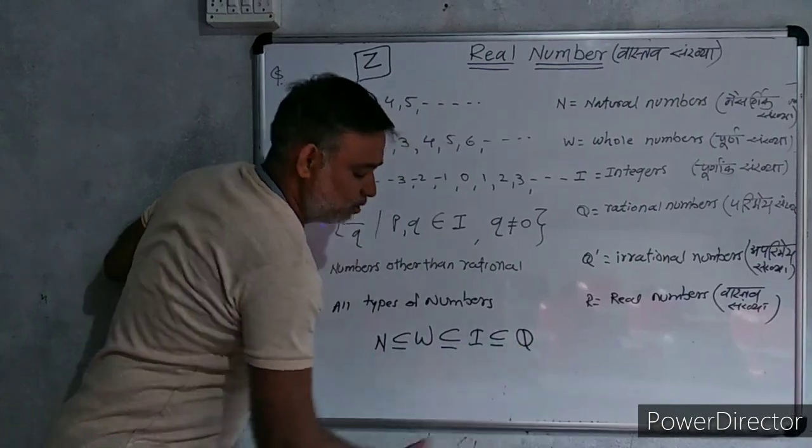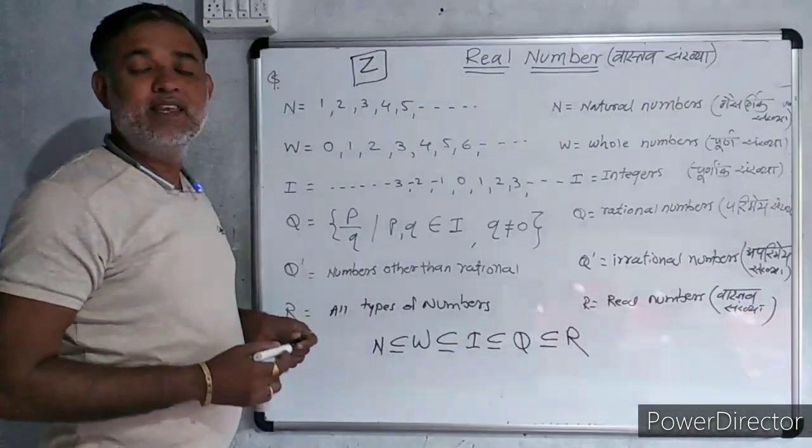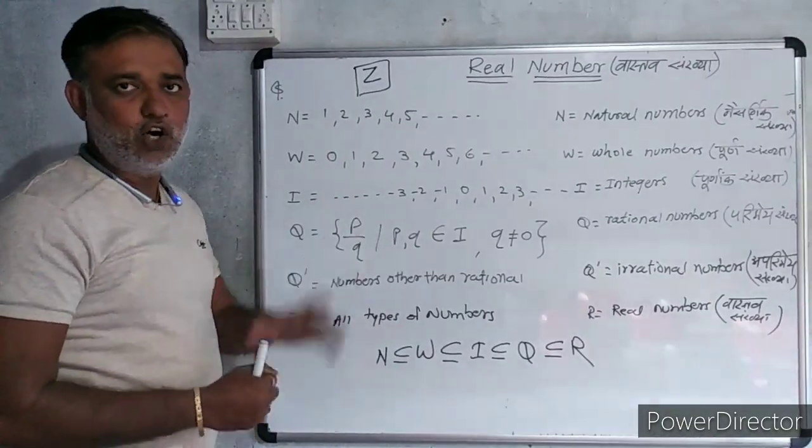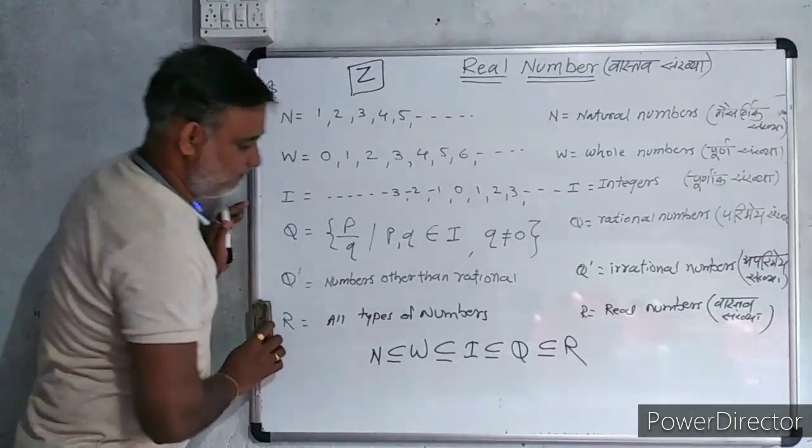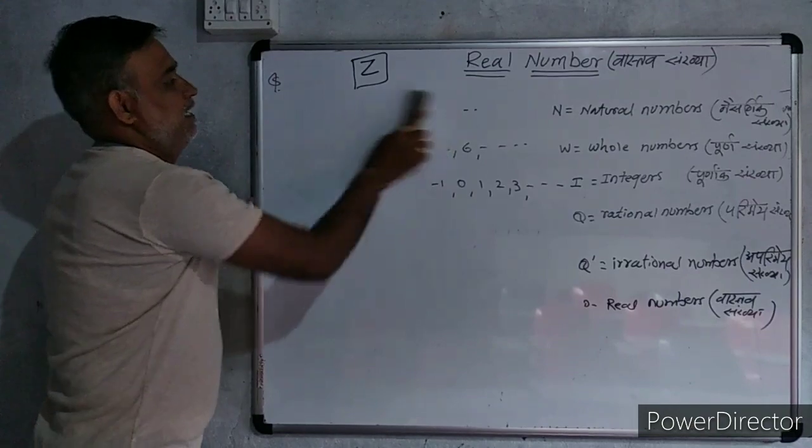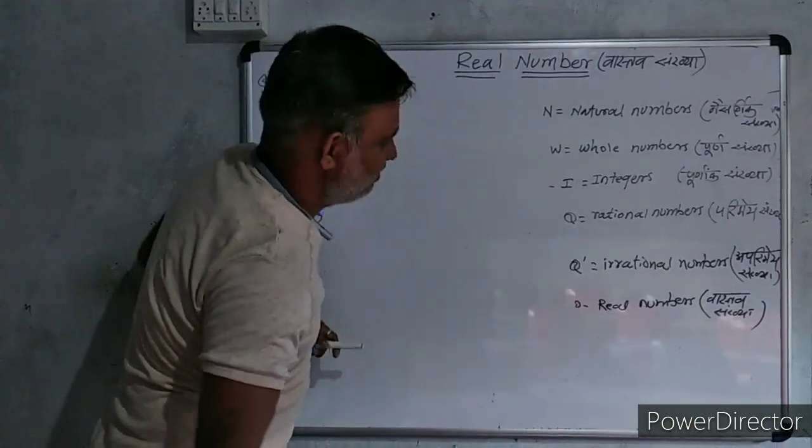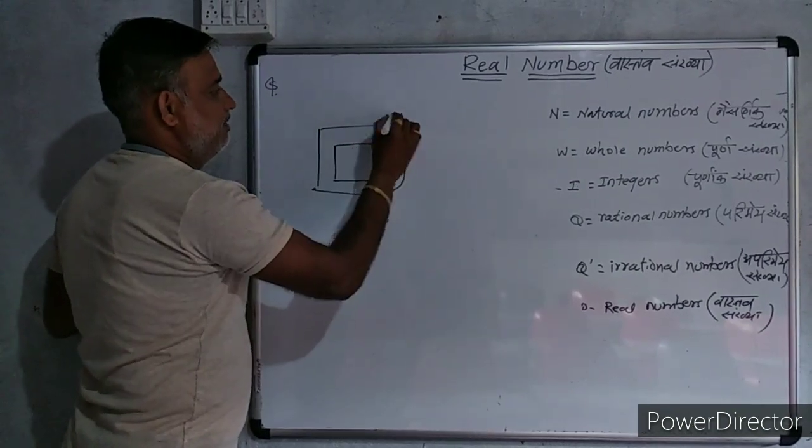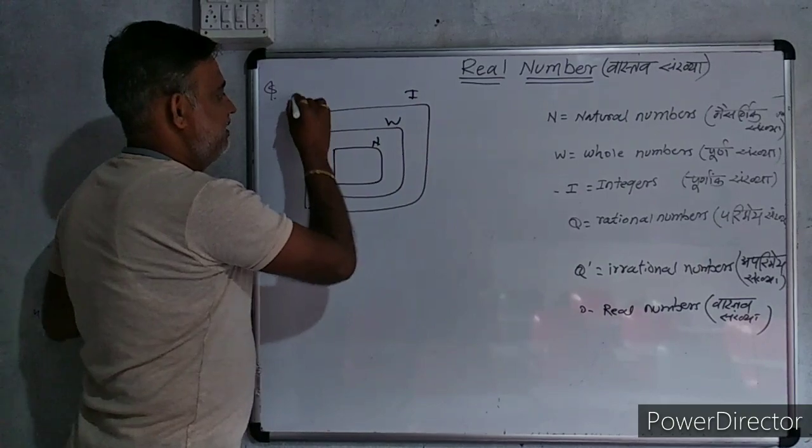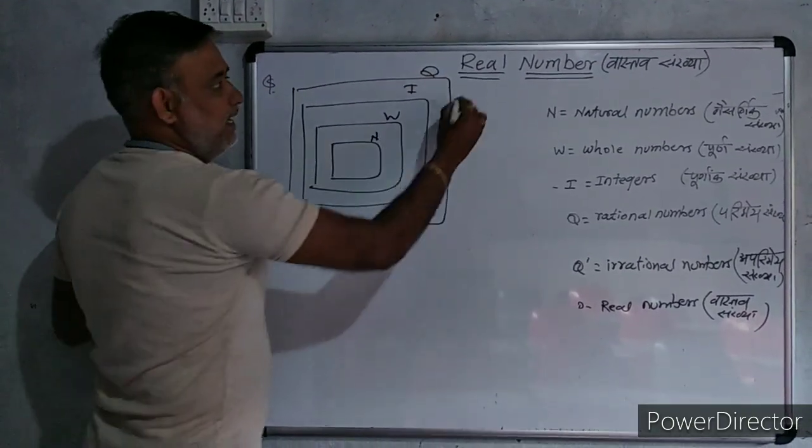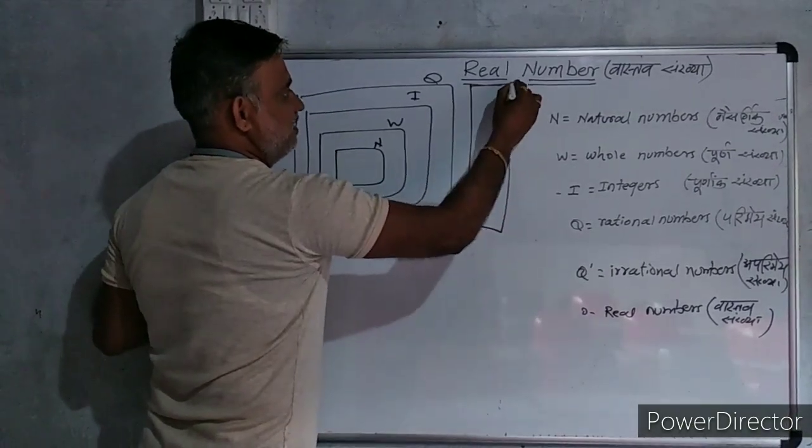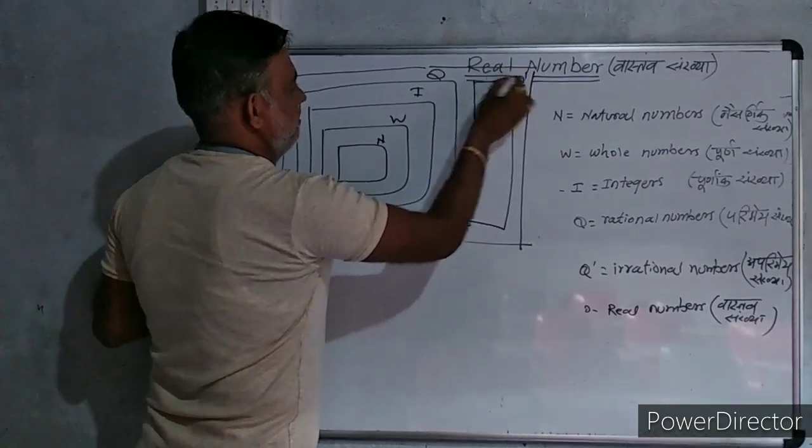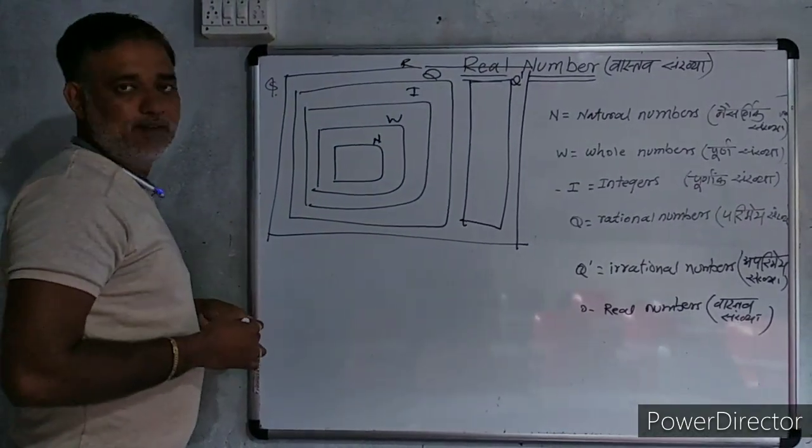Then, integers are subset of Q. And Q is subset of R. It is the universal set for all other sets. You can pause the screen and write this also. If we represent it by Venn diagram: suppose it is N, then it is W, then it is I, then it is Q. And Q and Q prime are different from each other. Therefore, it is Q prime and all are included in the set that is R.